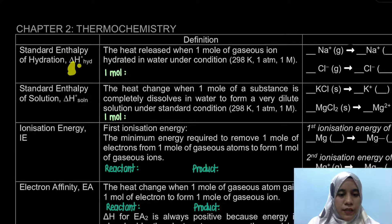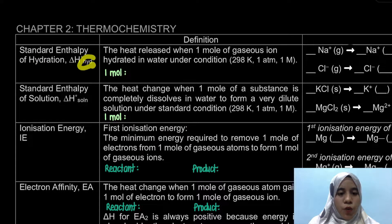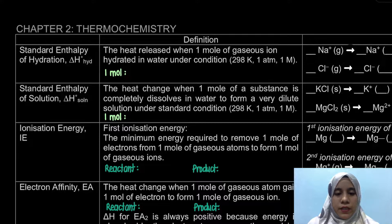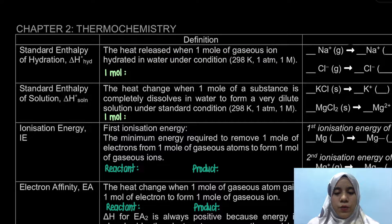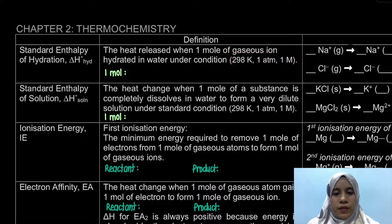The first one we're going to look at is the standard enthalpy of hydration, denoted as ΔH°hyd. The definition is: it is the heat released when one mole of gaseous ion is hydrated in water under standard conditions, which is 298 K and 1 atm.